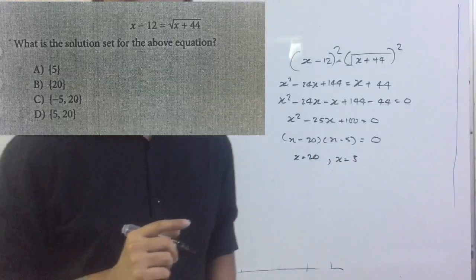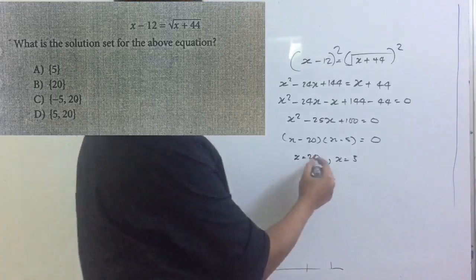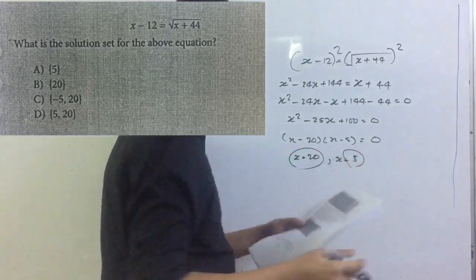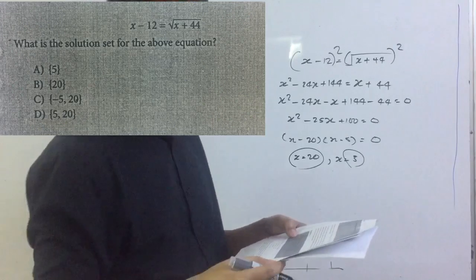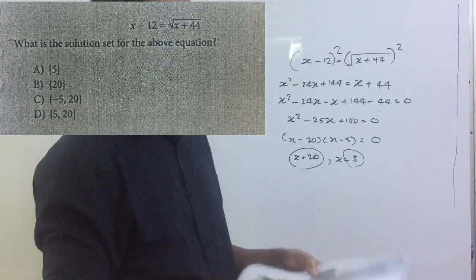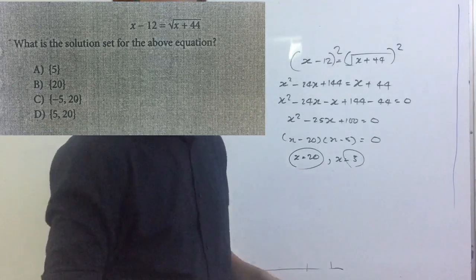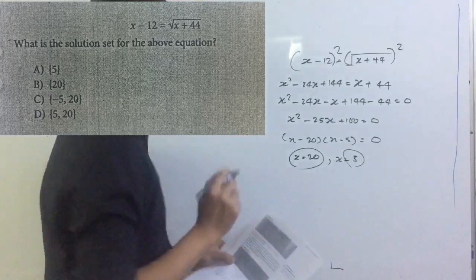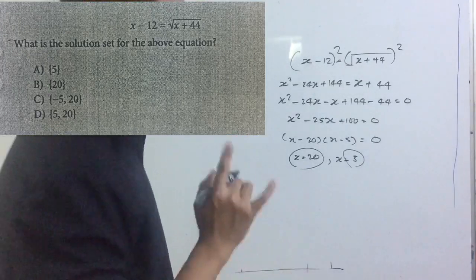Most students are mistaken. Once they get the answers 20 and 5, they are going to look at the answer choices and choose both. But that is wrong. You have to be careful about that — you always have to check for the extraneous solution.